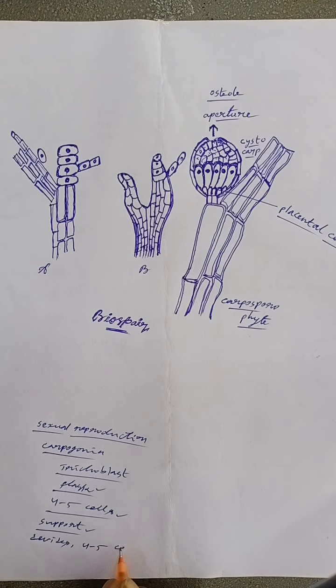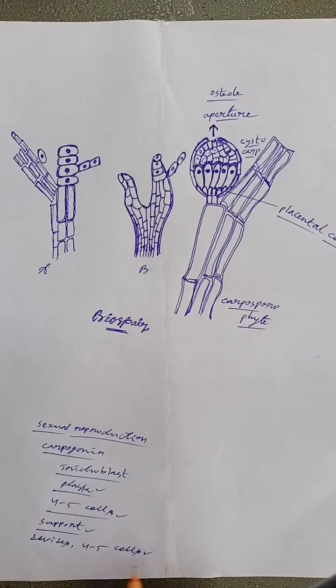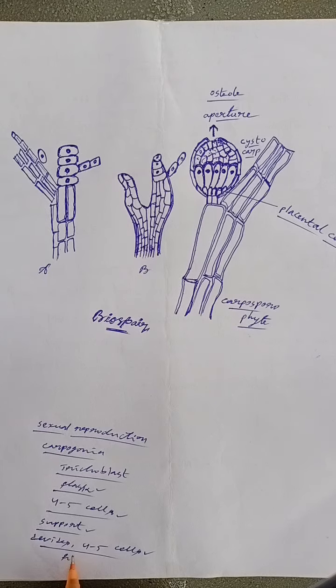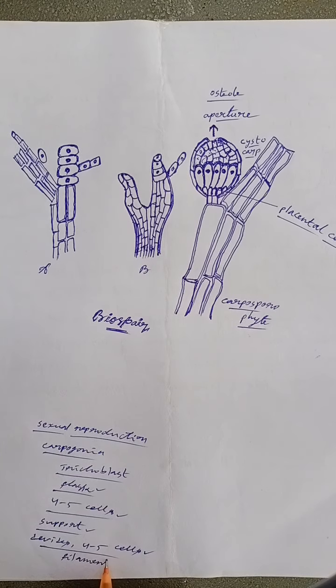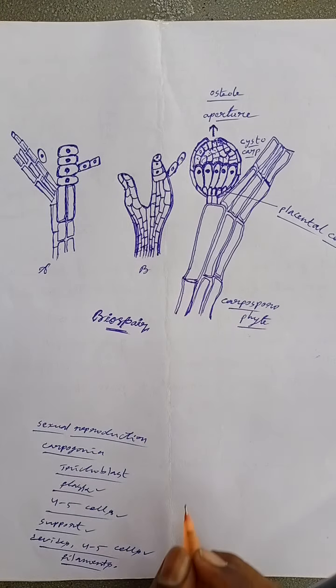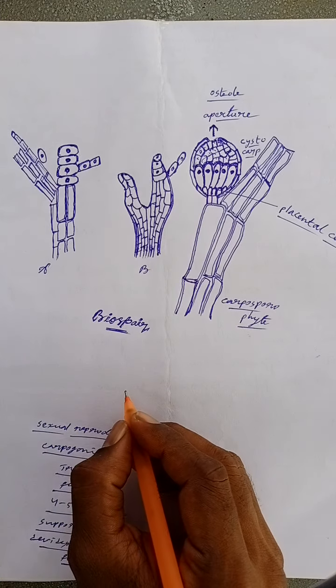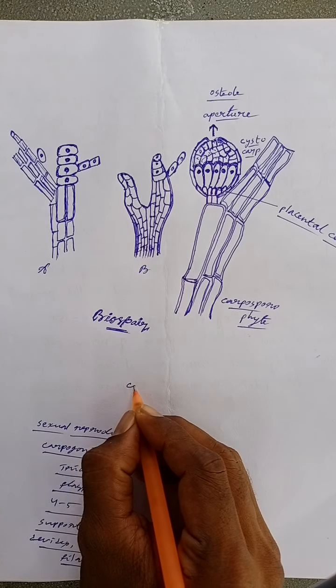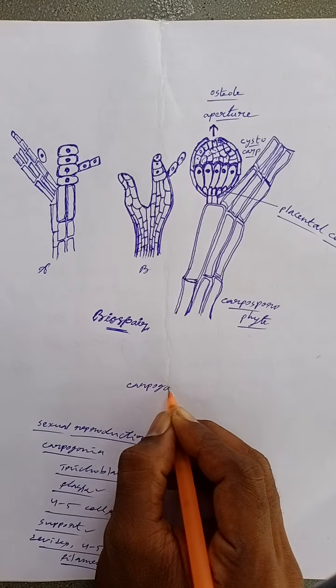The terminal cell of carpogonial filament functions as carpogonial mother cell which eventually forms carpogonium. The basal swollen part of carpogonium has egg and appears narrow elongated neck which is called as trichogyne.